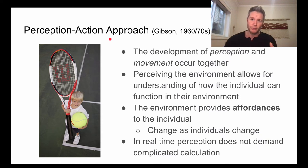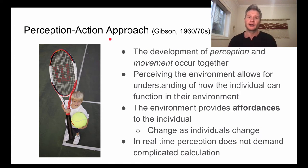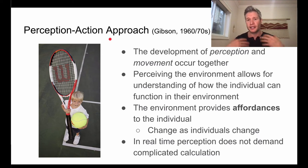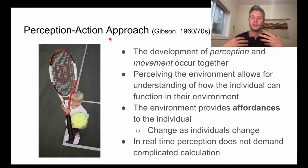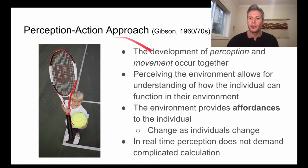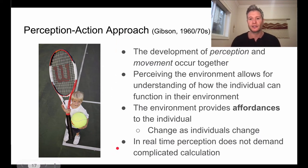There's a correlation between younger siblings starting to walk sooner, and a lot of this is because they start perceiving their siblings moving around faster than they are — they perceive it, mirror it, and then act that way sooner. That's perception-action: how those two things are tied together. You need to perceive the environment before you can move in it.